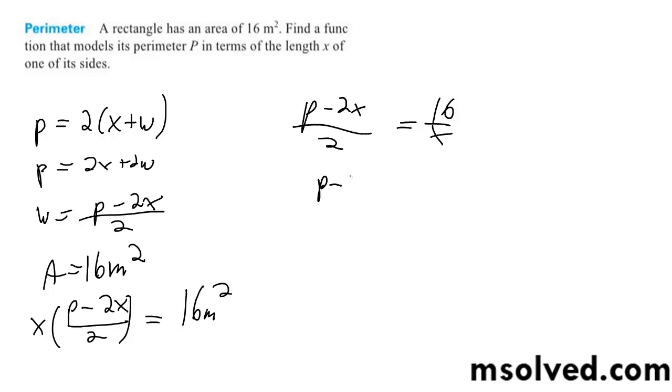And p minus 2x is equal to 32 divided by x. And then finally, p is equal to 32 over x plus 2x.